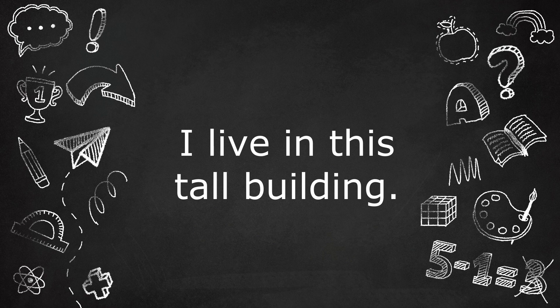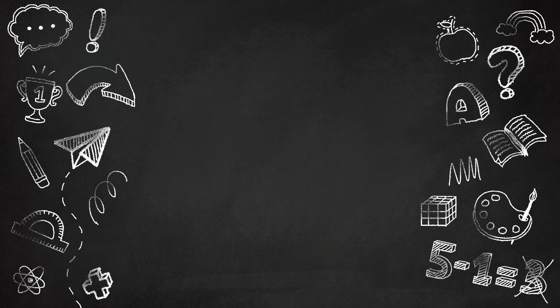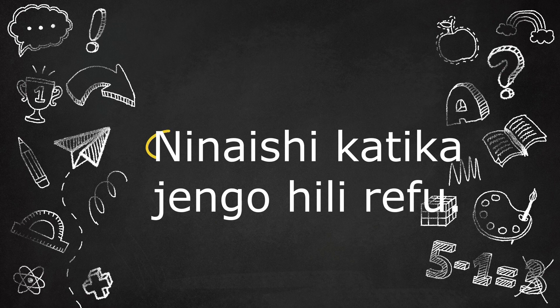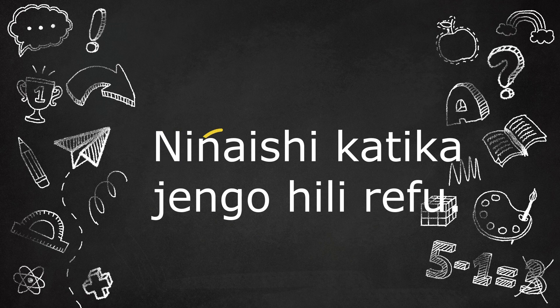Using all the knowledge you have acquired up to this point, let us see if we can make a slightly complicated sentence. I live in this tall building. I live would be Ni for I, Na for present tense. If you still need help in terms of how to formulate a verb, please refer to my video on making simple Swahili sentences.